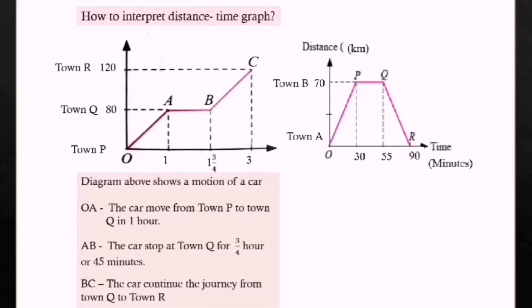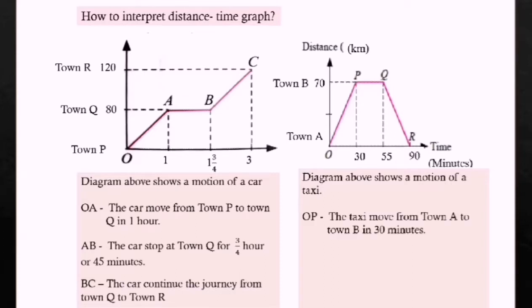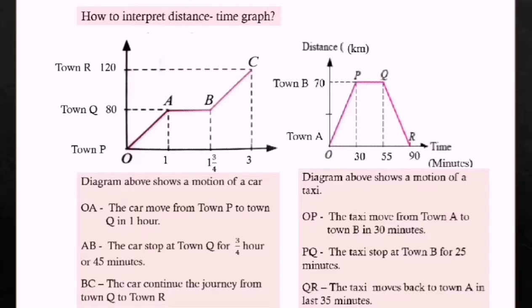In diagram 2, the diagram shows the motion of a taxi. The taxi moves from town A to town B in 30 minutes. In segment PQ, the taxi stops at town B for 25 minutes — calculated as 55 minus 30. In segment QR, the taxi moves back to town A in the last 35 minutes. When the graph goes down, it means the vehicle is moving back.